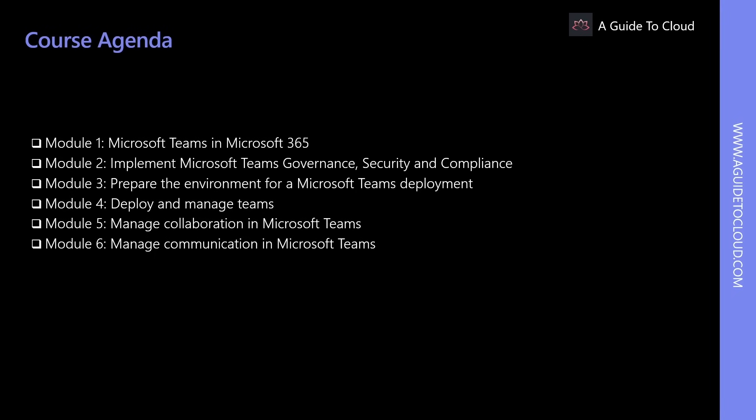In the third module, you will learn how to plan and upgrade from Skype for Business to Microsoft Teams by evaluating upgrade paths with coexistence and upgrade modes. In the fourth module, you will learn how to create and manage teams, manage memberships and access for both internal and external users. In the fifth module, you will learn how to manage chat and collaboration experience such as team settings or private channel creation policies.